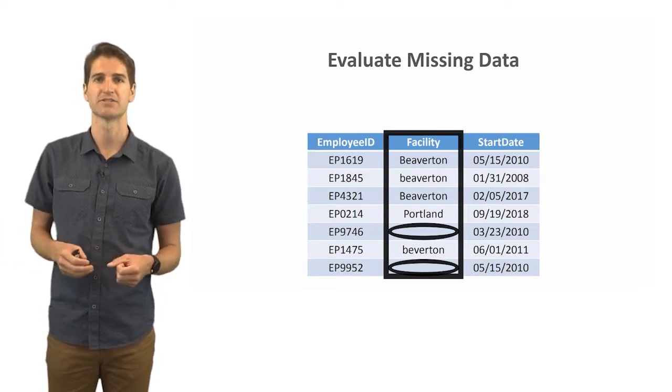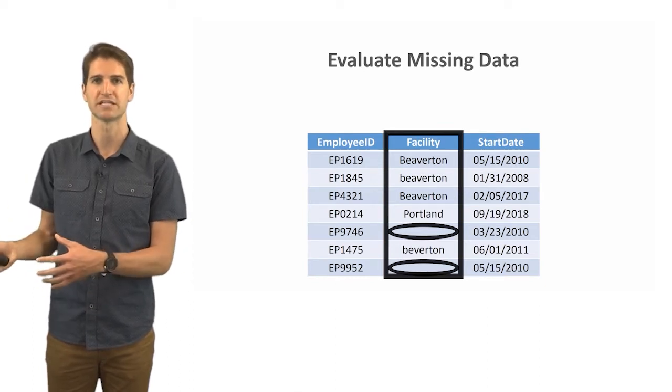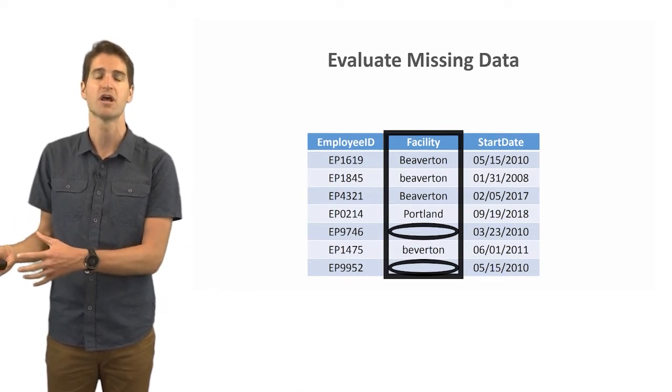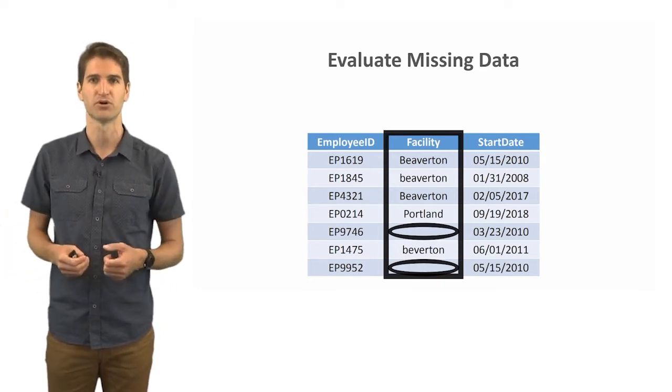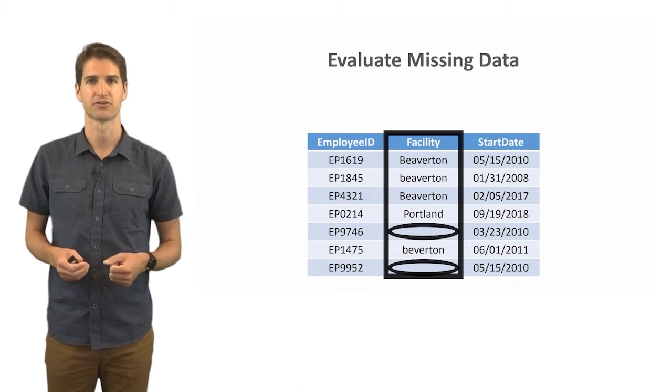If it's the latter, you'll need to think about what do you do with those people for subsequent analysis. Do you keep them in if they don't have a score for this facility, or do you kick them out or treat them as outliers?